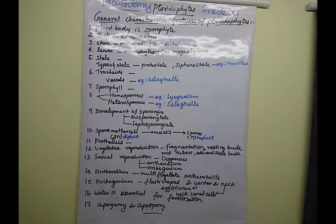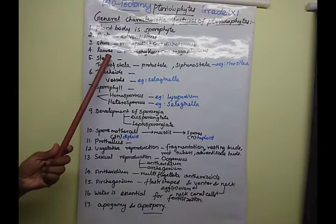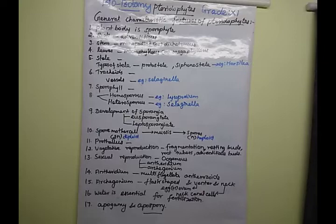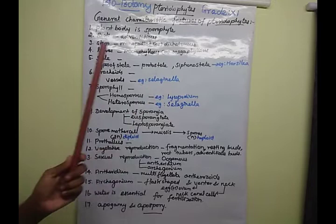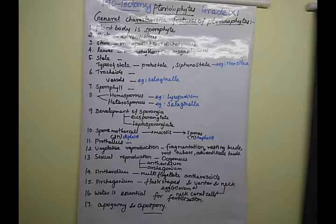Now we are going to learn the general characteristic features of Pteridophyte members. First, the plant body is the sporophyte - the sporophyte is the dominant one. They are differentiated into root, stem, and leaves. The roots come under adventitious roots. The stem is monopodial and dichotomous. The leaves are present as microphylls and megaphylls.